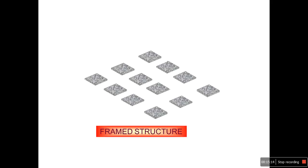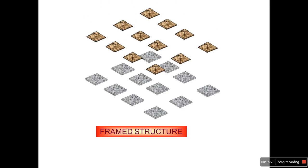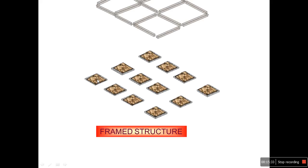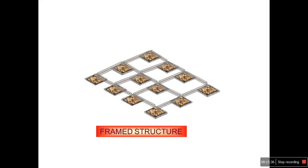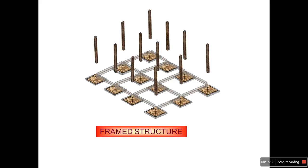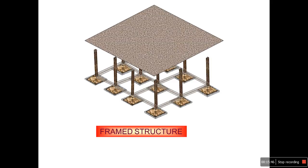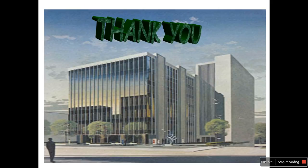A figure shows a typical framed structure example: first, individual PCC foundation is laid (shown in gray), then isolated footing is laid, connected by beams, individual columns are constructed, and a typical RCC slab is placed above the columns. This is a typical example of a building with a foundation. Thank you for listening to this lecture.